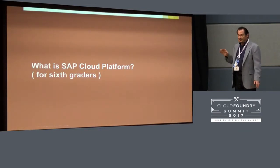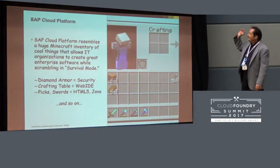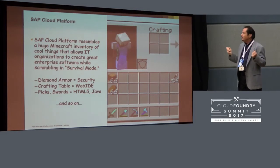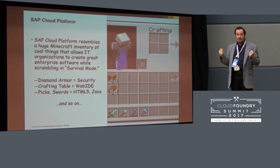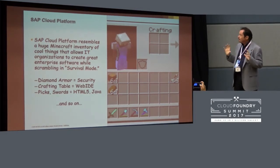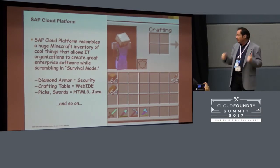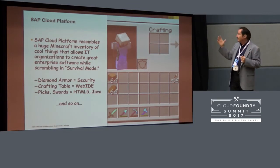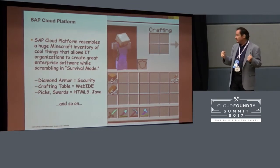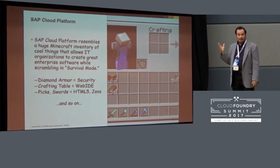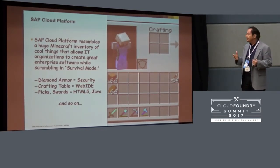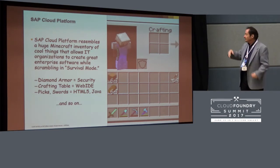That explanation doesn't satisfy my daughter — she's in sixth grade. So this is what I tell her: SAP Cloud Platform is like a big Minecraft inventory of really cool things, and they let IT organizations create really great enterprise software while they are scrambling in survival mode. You can think of the securities like diamond armor, the web IDE is like a crafting table, HTML and JavaScript are your swords and picks. We have Node.js and so on. You can imagine who are the skeletons firing arrows and the cave spiders.